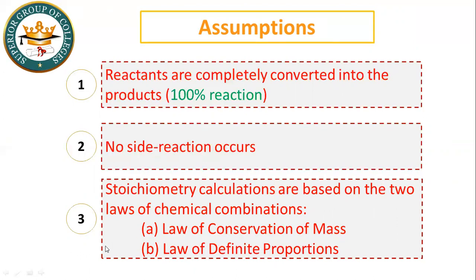The law of definite proportions means we do not change the formulae or the ratios. For example, water has a definite ratio of hydrogen to oxygen. Whether you take water from a river, canal, or spring, the ratio of hydrogen to oxygen in water always remains the same. So these are the three assumptions of stoichiometry.